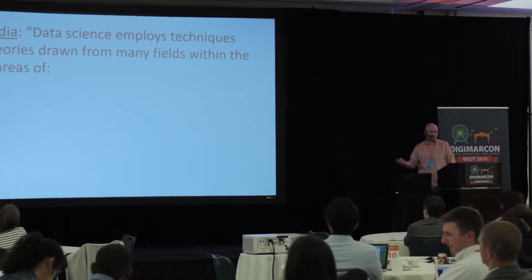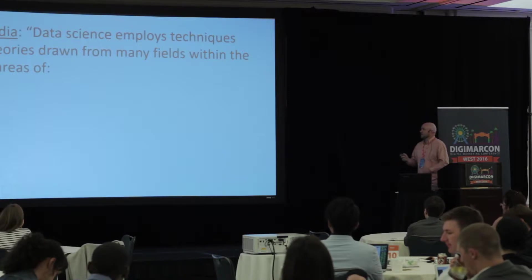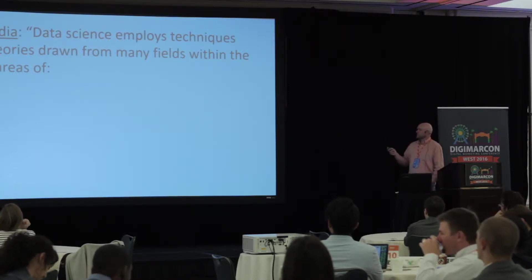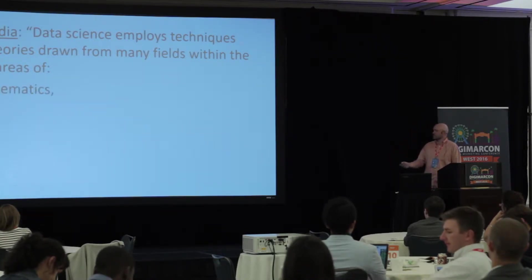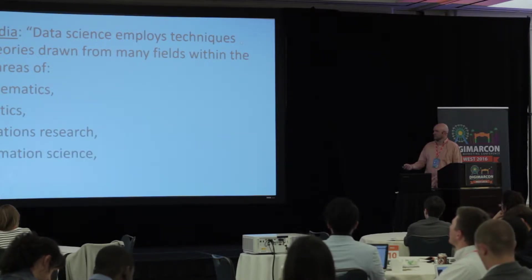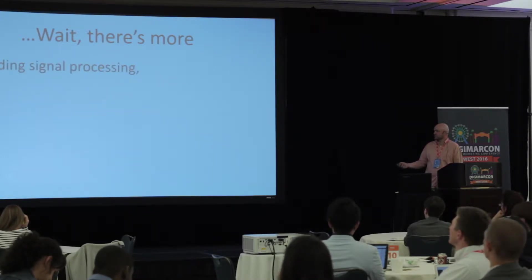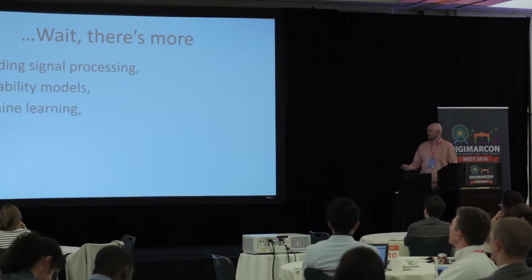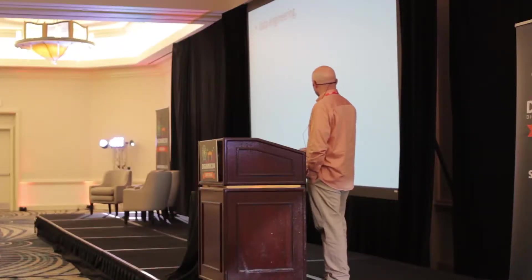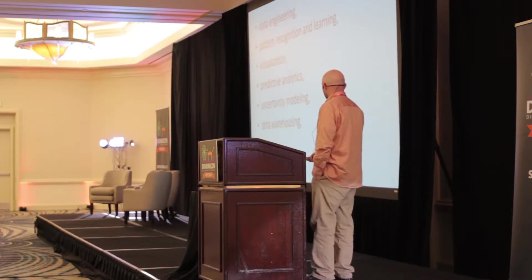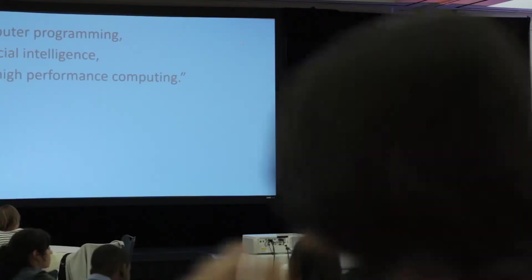Wikipedia defines data science: it employs techniques and theories drawn from many fields within the broad areas of mathematics, statistics, operations research, information science, computer science — and there's more — including signal processing, probability models, machine learning, statistics learning, data mining, databases, data engineering, pattern recognition and learning, visualization, predictive analytics, uncertainty modeling, data warehousing, data compression, computer programming, artificial intelligence, and high performance computing.